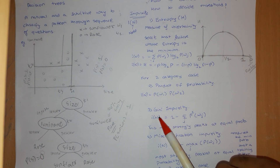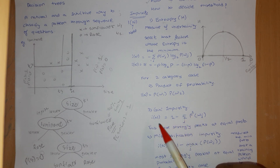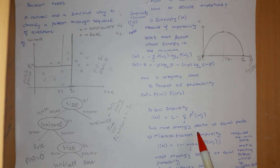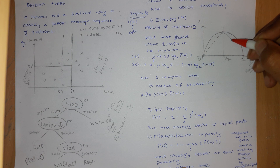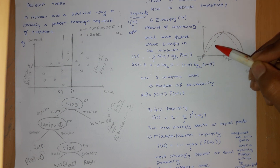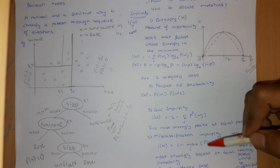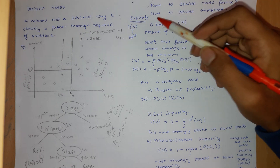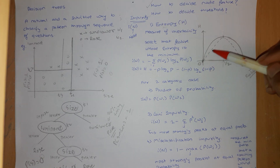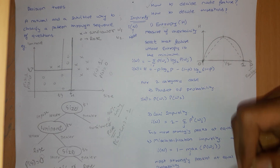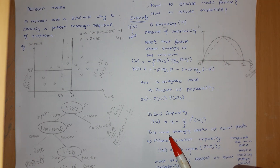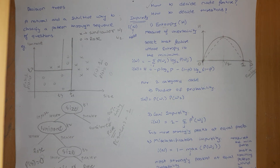Next, people talk about Gini impurity, which is given by its formula and gives stronger peaks at equal probability. The Gini curve peaks faster than entropy. This is advantageous when you use gradient descent, because a faster-peaking function gives a stronger gradient signal.